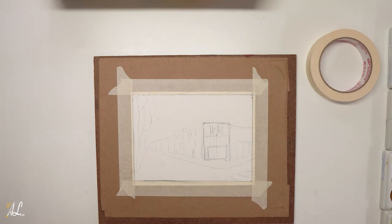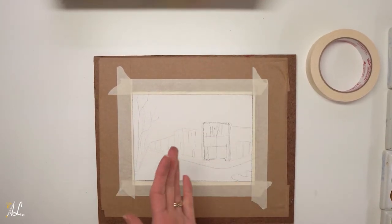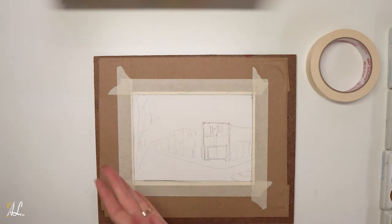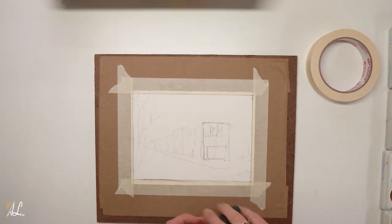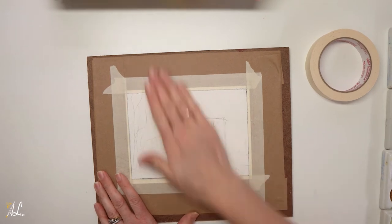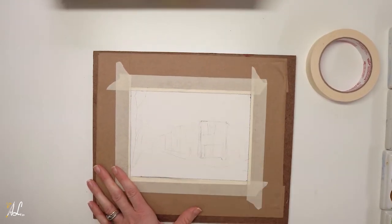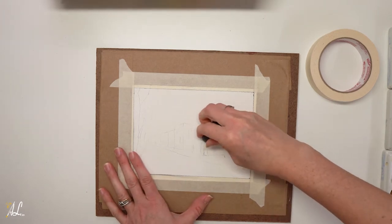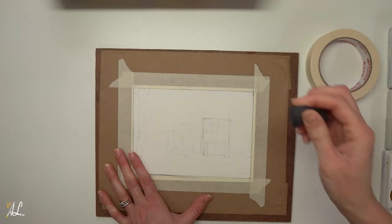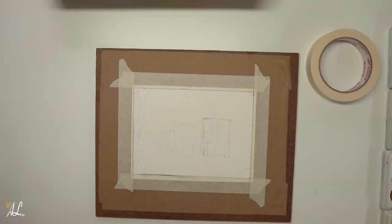You're going to take your kneaded eraser and you're just going to rub over it because you don't want to have too much of that sketch showing through into your drawing unless that's something you like. But I found also that this graphite paper can bleed a little bit if you're doing light colors. So I just like to get all the extra residue off of there.